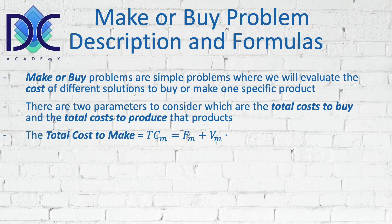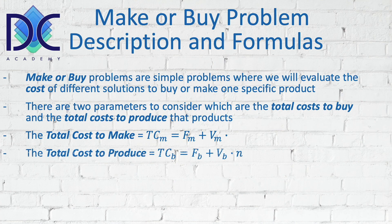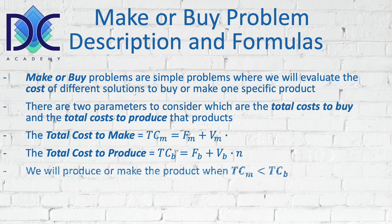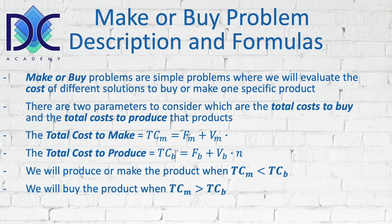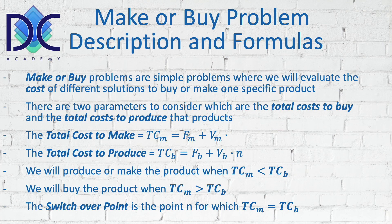The total cost to make is the fixed cost to make plus the variable cost to make times n. The total cost to buy is the fixed cost to buy plus the variable cost to buy times n. We will make the product when the total cost to make is smaller than the total cost to buy, and buy it when the total cost to make is larger. The switch-over point is where the two total costs are equal.